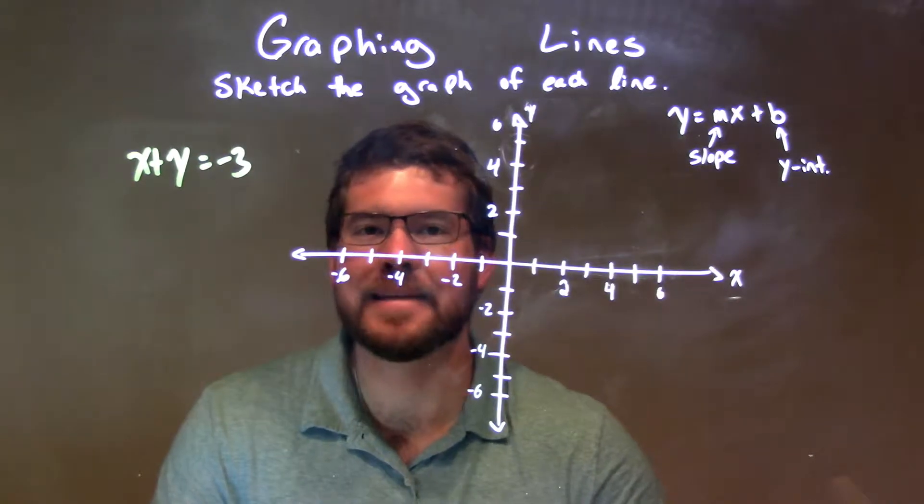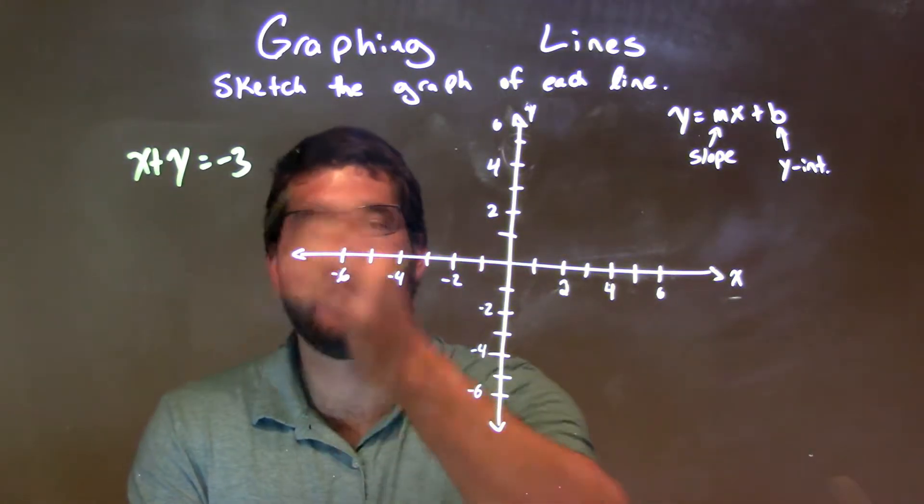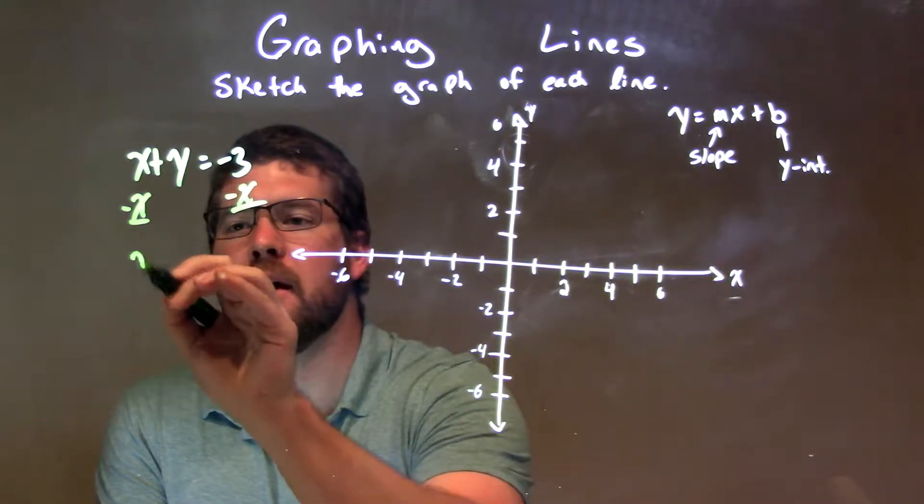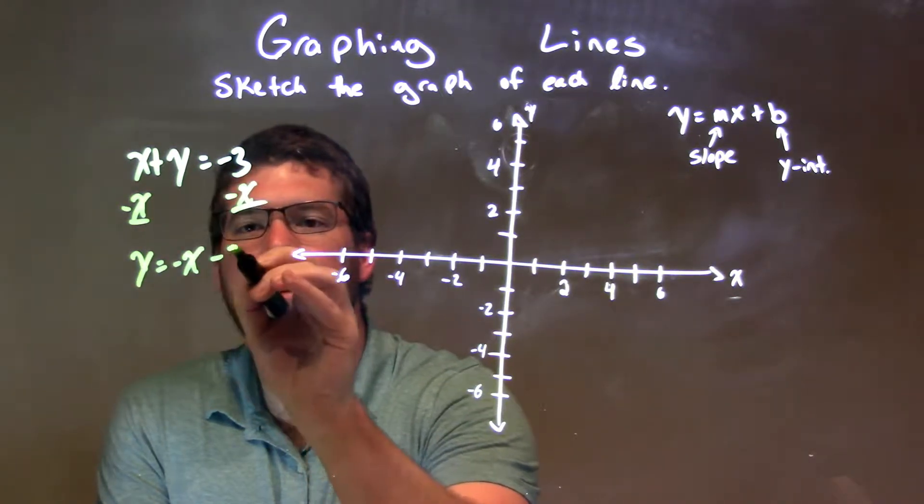My goal is to get y by itself. To do that, I have to subtract x from both sides. So we have negative x, negative x. And y equals negative x minus 3.